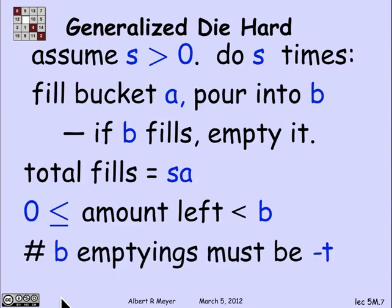The point is that the number of emptyings of bucket B must be exactly T, which is why the amount of water left in bucket B is S·A minus T·B. The reason it has to be minus T is: if there were more than T emptyings, bucket B would have gone negative — there just isn't enough room. And if there were fewer than T emptyings, the bucket would hold an amount larger than B. So the only possible number of emptyings of B is minus T. Remember, T is negative, so minus T is a positive number. That means I've put in S·A and taken out T·B, and I'm left with exactly the linear combination S·A minus T·B.